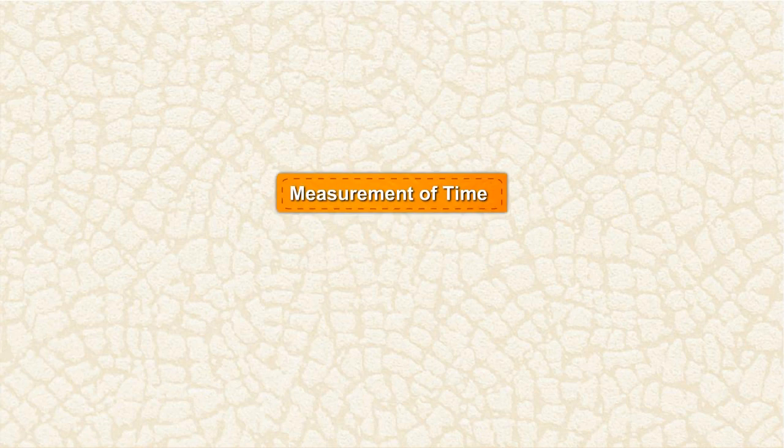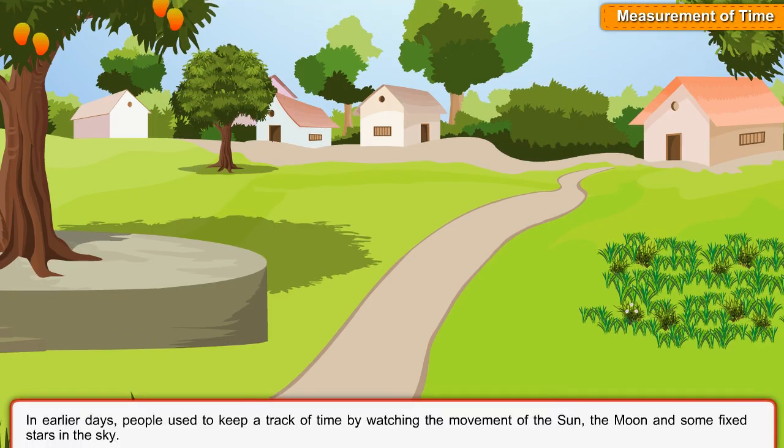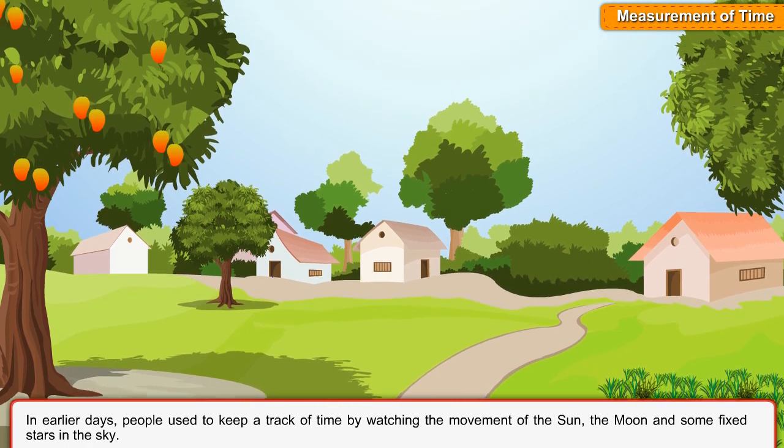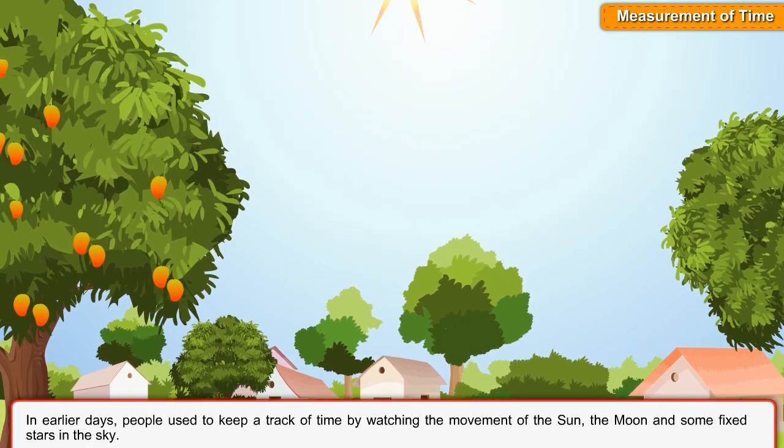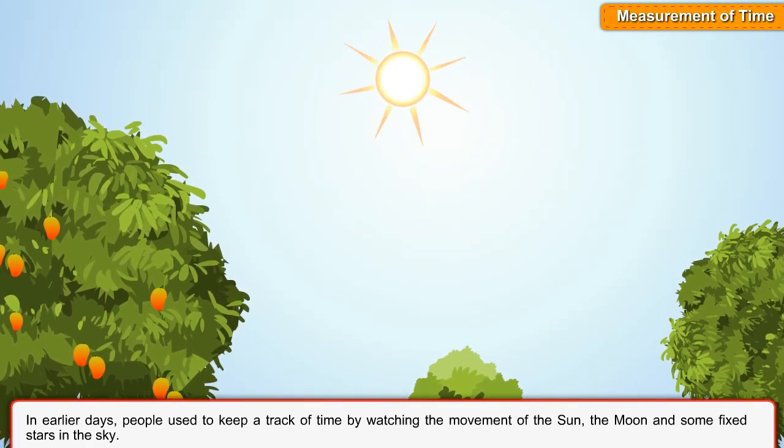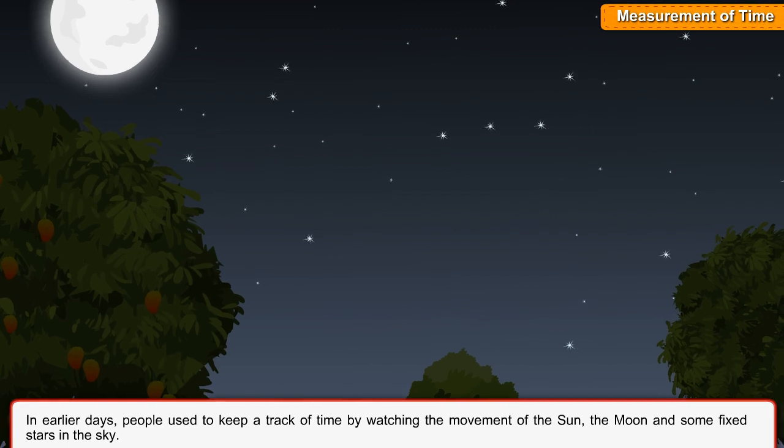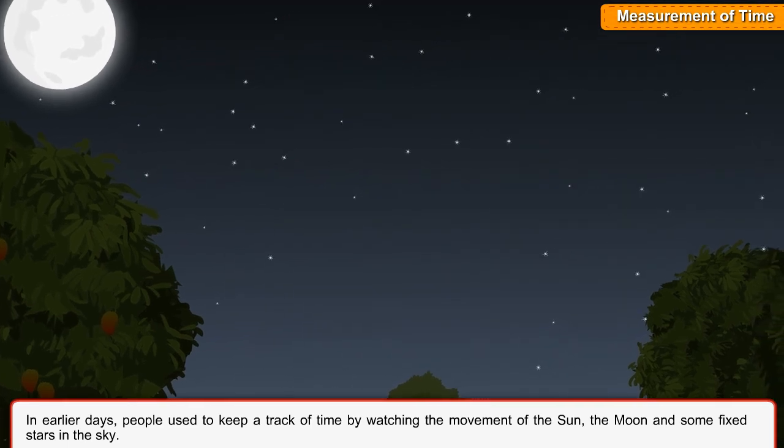Measurement of Time. In earlier days, people used to keep a track of time by watching the movement of the sun, the moon, and some fixed stars in the sky.